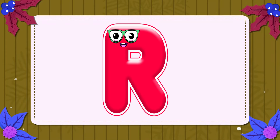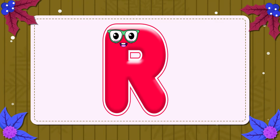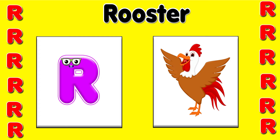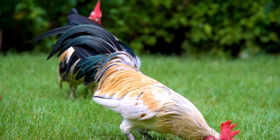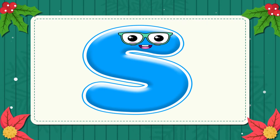R. This is the letter R. R is for rooster — r, r, rooster. R is for rainbow — r, r, r.